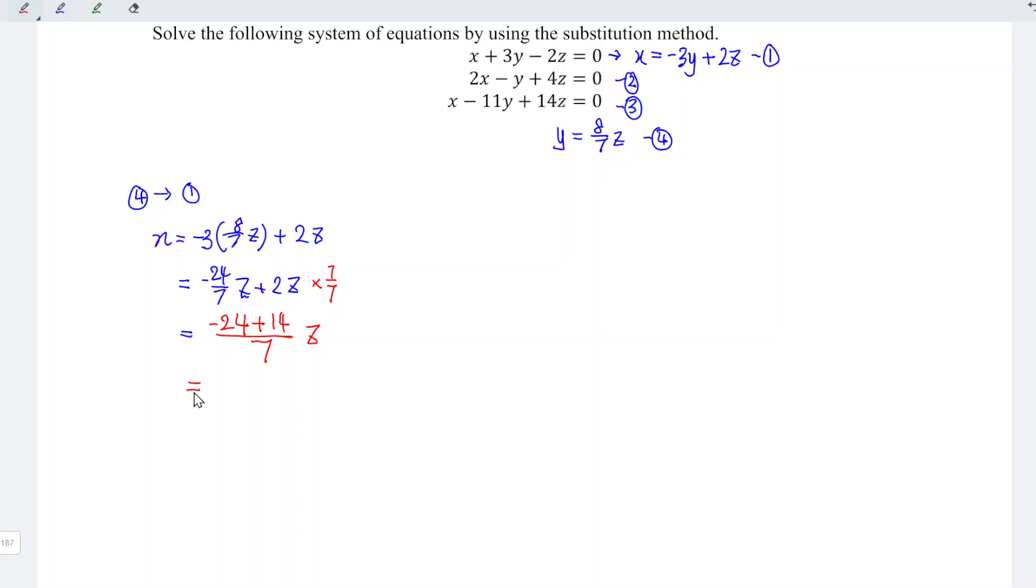And this is equal to minus 24 plus 14 is equal to minus 10, and we have divided by 7 times z. So x is equal to minus 10 divided by 7 times z, and this is equation number 5.